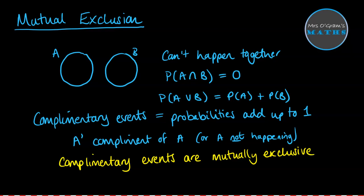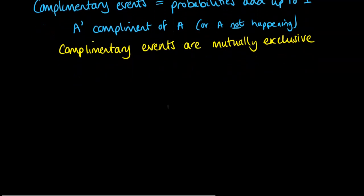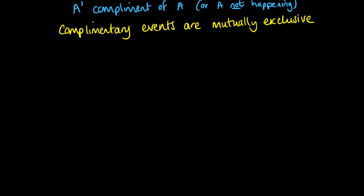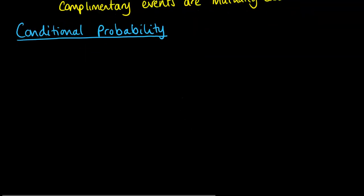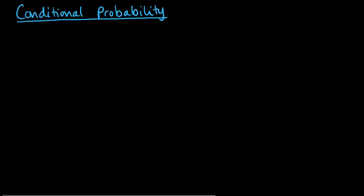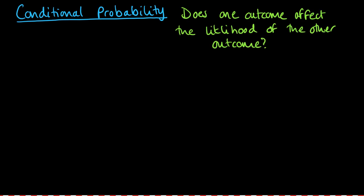This naturally leads to conditional probability, where we're thinking about one event affecting another. It's things like what's the likelihood of somebody being late for school if it's raining or not. If it's raining, it might affect their journey to school, there might be more traffic, they might be more likely to be late. That would be conditional probability where the probabilities of the subsequent event could be affected by the first one.